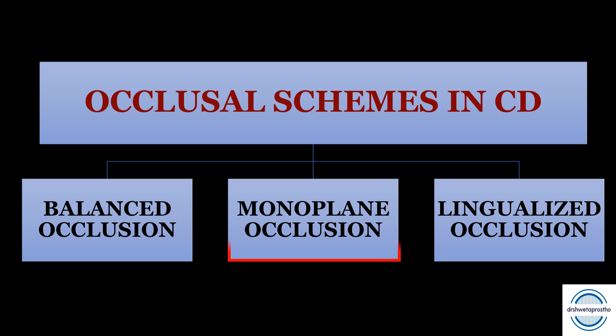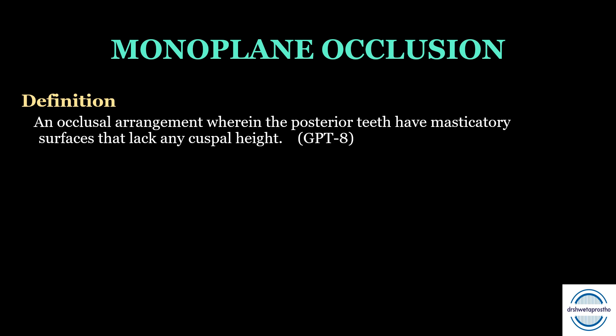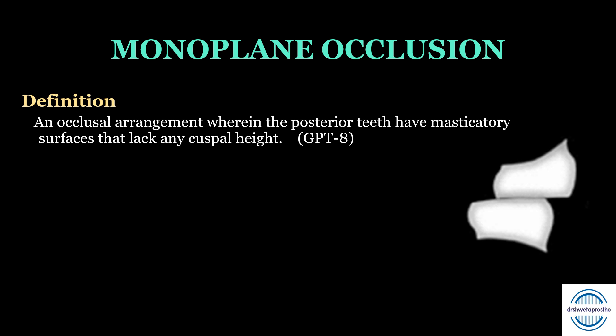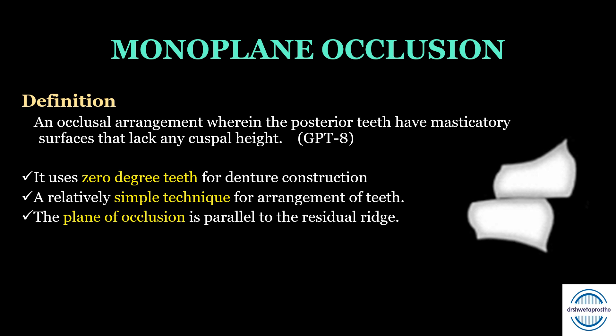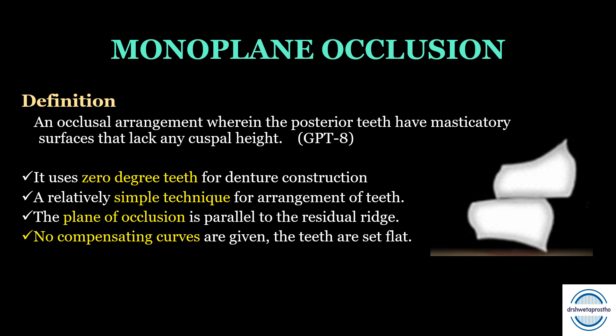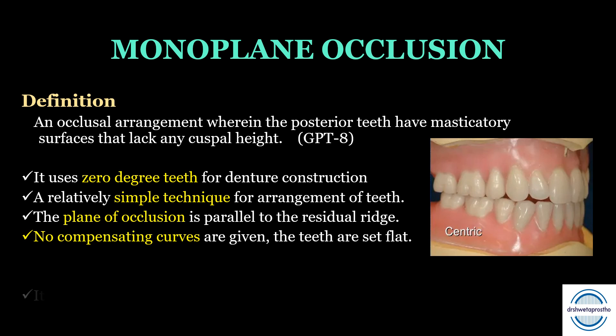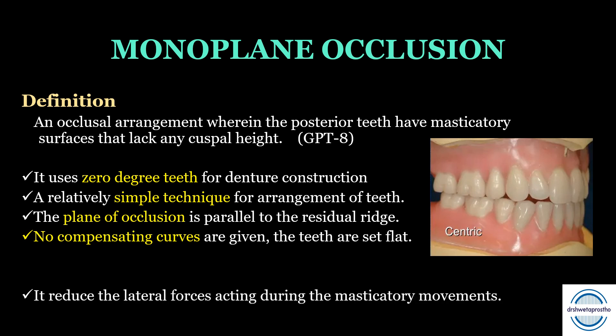The next occlusal scheme is monoplane occlusion. It is an occlusal arrangement wherein the posterior teeth have masticatory surfaces that lack any cuspal height — there will be no cusp. We use zero-degree teeth, also called cuspless or non-anatomic teeth. Their arrangement is relatively simple compared to bilateral balance because there is no maximal intercuspation. The plane of occlusion is set parallel to the residual ridges to maintain stability, there are no compensating curves, and the teeth are set flat. This concept was mainly used to reduce lateral forces acting during masticatory movements.